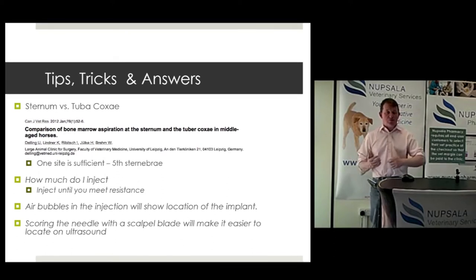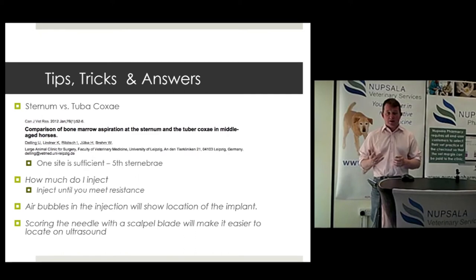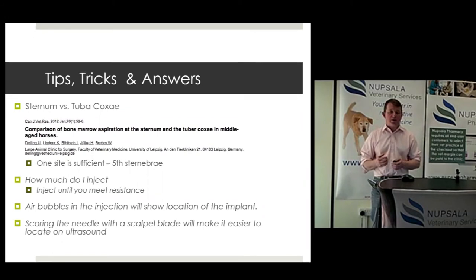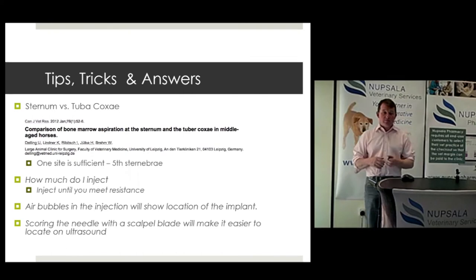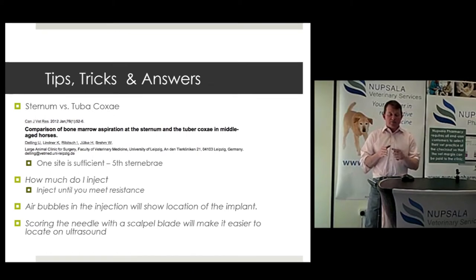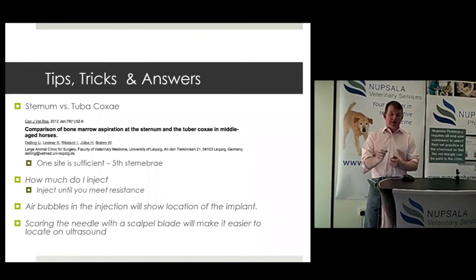You can remove bone marrow from the tuber coxae from the pelvis, but it's very hard — there's a lot of cortical bone to get through before you can draw marrow. Interestingly, a paper shows bone marrow aspiration from the sternum actually yields a better cell collection than via the tuber coxae. When injecting tendons, cells, platelets, or proteins don't need to be in a huge volume — they disperse very easily and the ripple effect goes farther than you think.